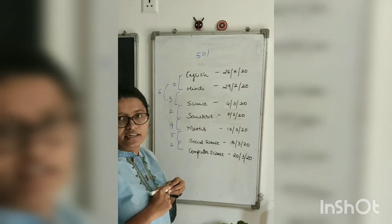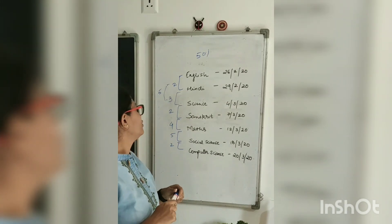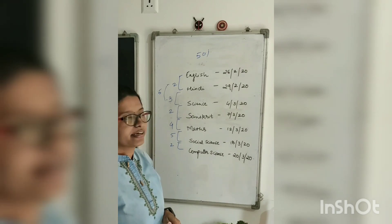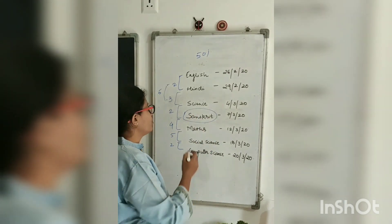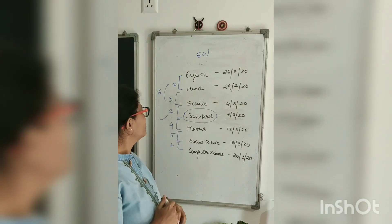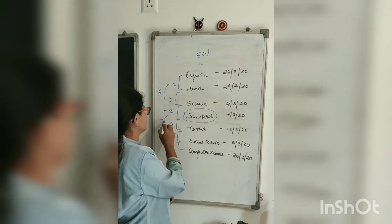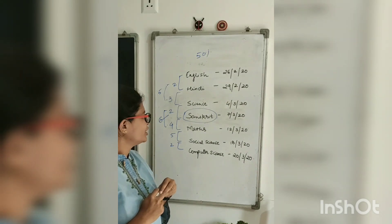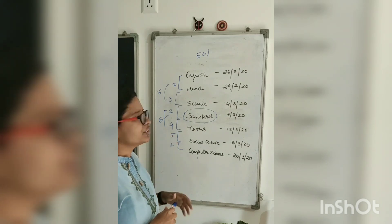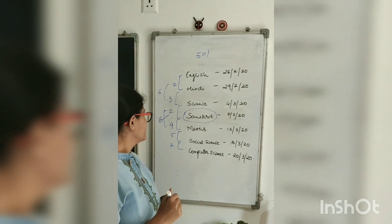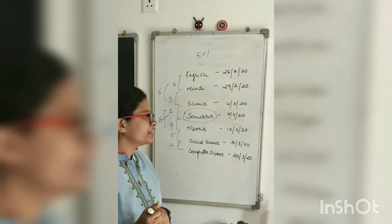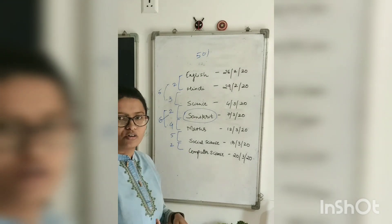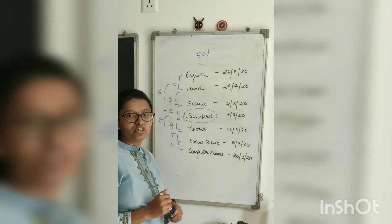In Science we have Physics, Chemistry, and Biology. From Sanskrit to Science there is a gap of 2 days, Sanskrit to Maths is 4 days, and with the Hindi gap added in, Maths has effectively a gap of 6 days — which is awesome, because there are almost 15 chapters in Maths. Maths to Social Science is 5 days of gap, which for Social Science is great. Computer Science is opted by some students, not all.